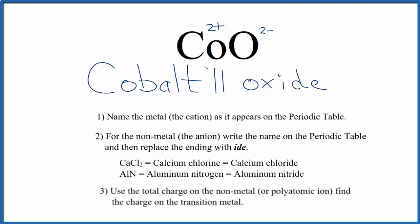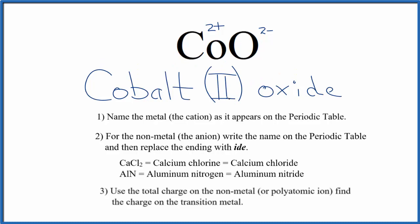So we write a Roman numeral 2 in parentheses, and this is the name for CoO - cobalt (II) oxide. And this 2 here, this 2 plus, that's why we have a Roman numeral 2 here inside the parentheses.